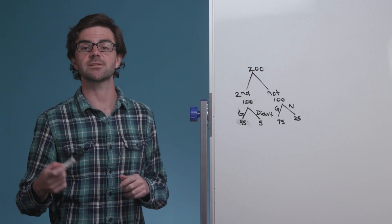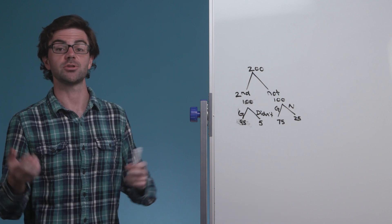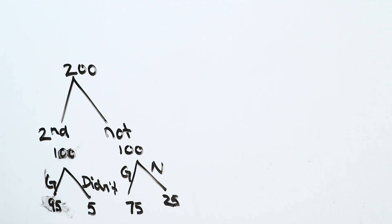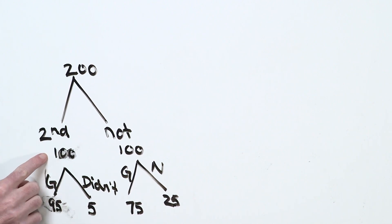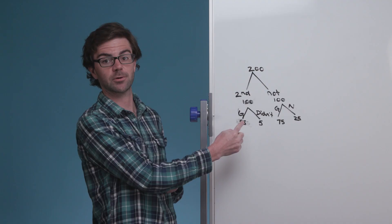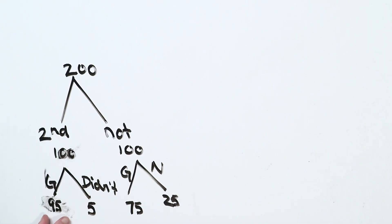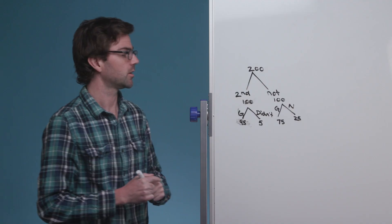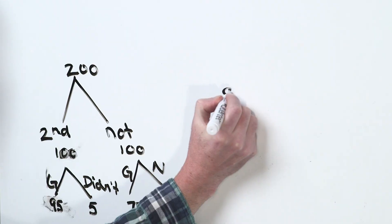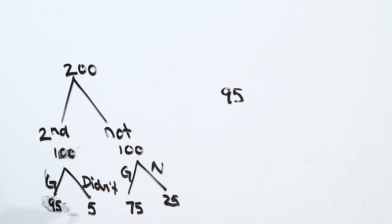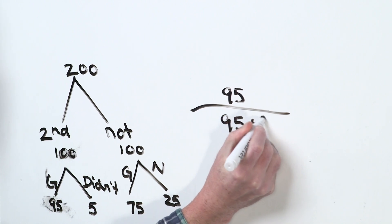And so the question is what's the probability you'll receive a second interview if you felt good. So what we know is the people who felt good are these people right here, and the people who received a second interview are these people over here. But the ones who felt good and received a second interview is just this group here. So the chance that you feel good and receive a second interview is 95, and the chance that you felt good at the end is 95 plus 75.